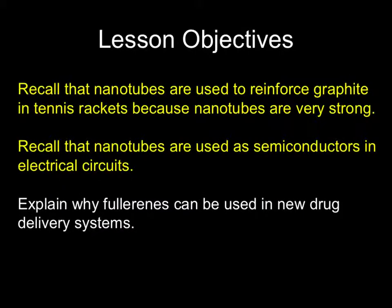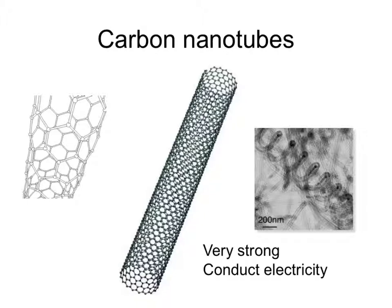Now looking at nanotubes and fullerenes, their properties and why they have these properties. Carbon nanotubes have got giant long structures made up of hexagons which are joined up as if you have a piece of chicken wire which has been joined up from side to side. These are very, very strong because they're composed of strong covalent bonds.